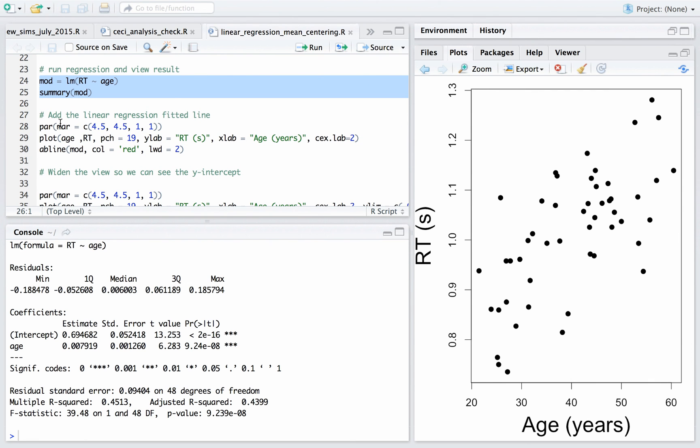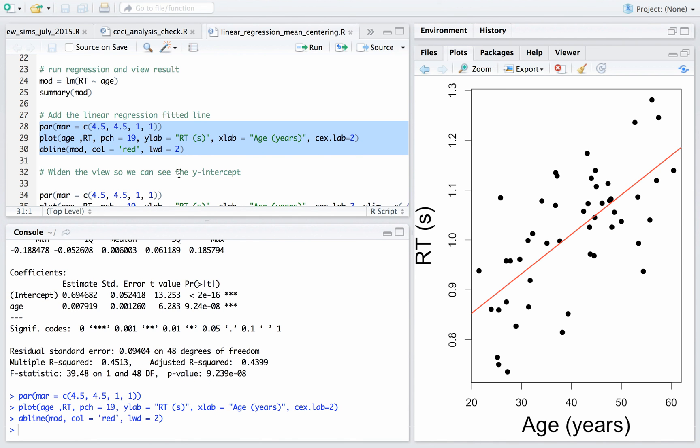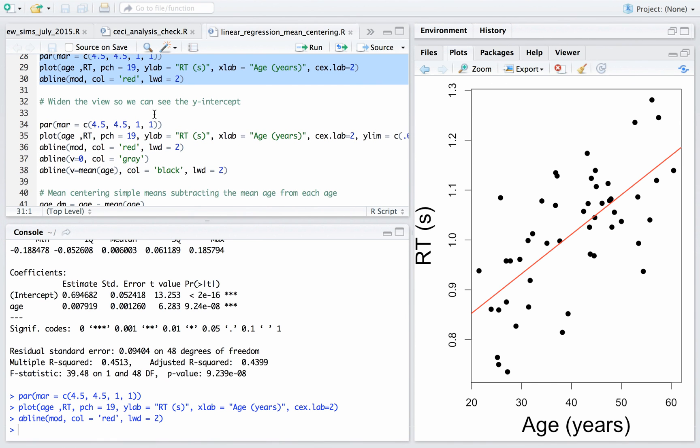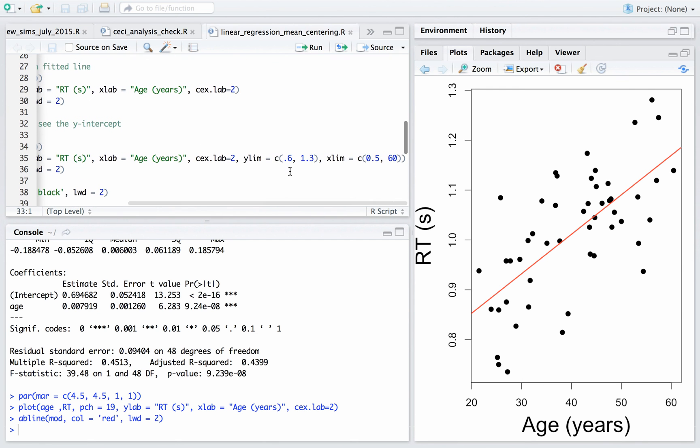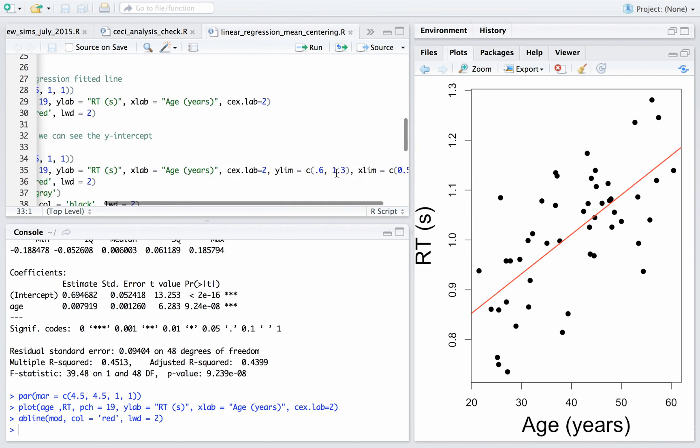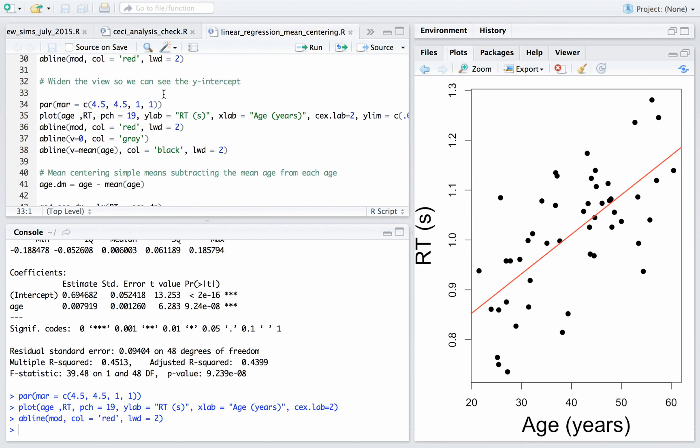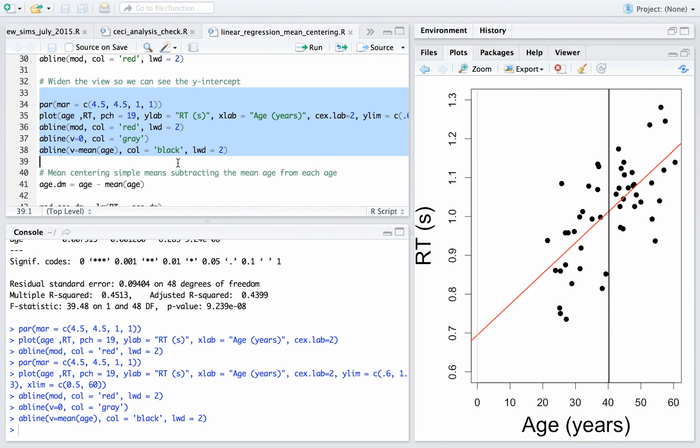Just so you know, you can add the linear regression fitted line by replotting the data, and then you can use this abline command with the model. There it is, so you can see on the right there's our plot. Moving down here, just stretching things out. I changed the x limit so zero is included so we can see the y-axis. So I'm just adding it with this abline command, and I'm also adding a vertical line at the mean age. So that's this plot. So this abline command here was adding the red line, which is the regression fit. V equals zero is a vertical line at zero, that's the gray line. And then V equals mean of age is putting a vertical line at the mean of age. Made it black, changed it to a line width of two.